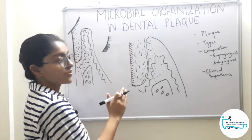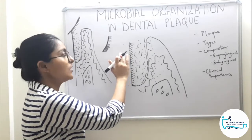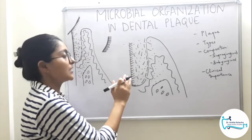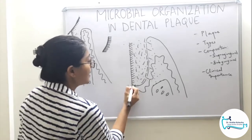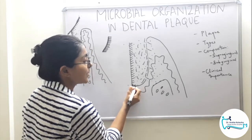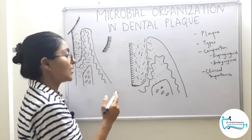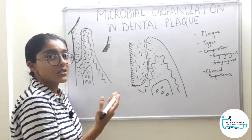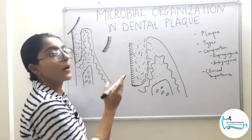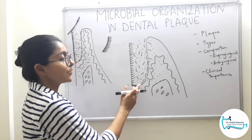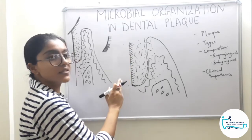In tooth-associated subgingival plaque, at the cervical portion we have predominantly filaments and some cocci and rods. As we go deeper, the filaments reduce in number, and at the deepest apical portion, filaments are virtually absent. The apical extent of the plaque is demarcated from the epithelium via host cells, mainly neutrophils. This apical portion predominantly harbors periopathogens, which are fastidious and strict anaerobes — that is why deeper pockets are their preferred habitat. Periopathogens are found in the apical portion, in direct connectivity with host tissue and the root surface.